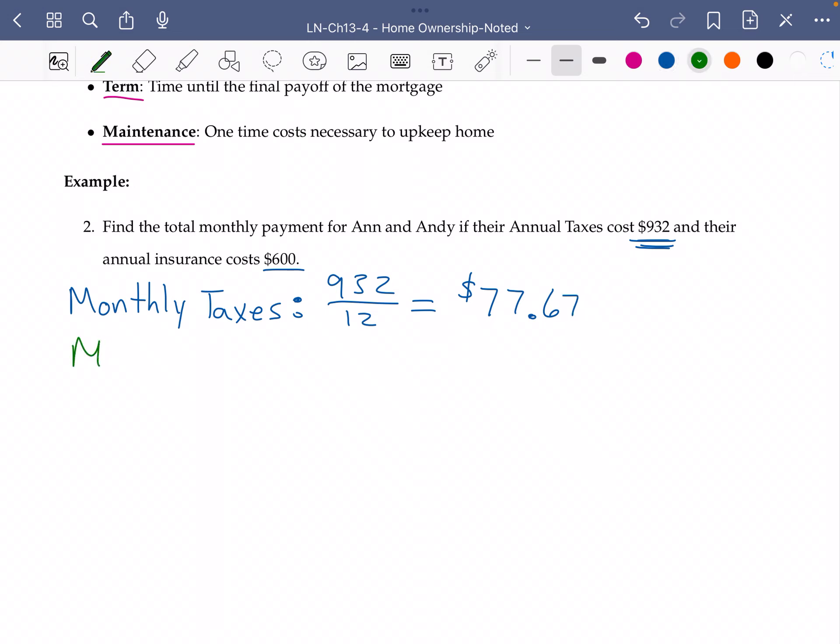Our monthly insurance is going to be $600 divided by 12, $50 that we are paying in insurance.